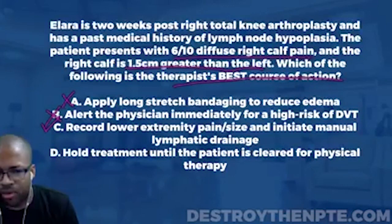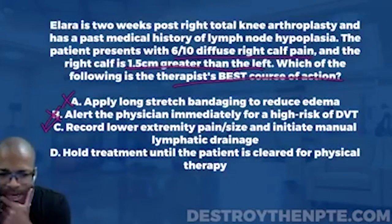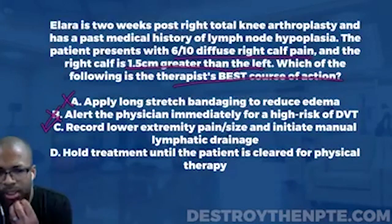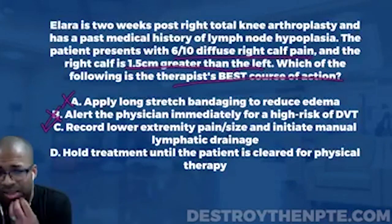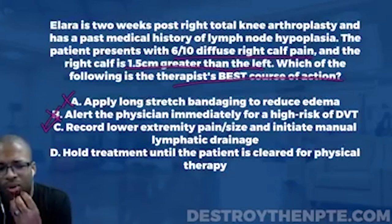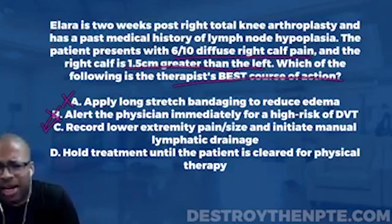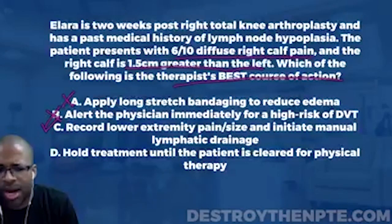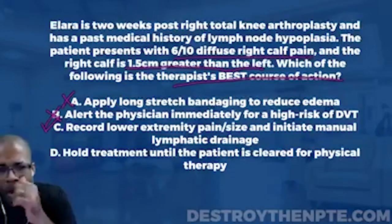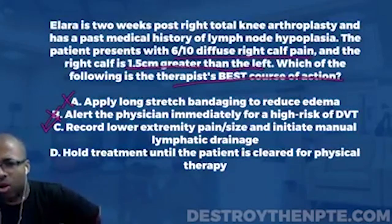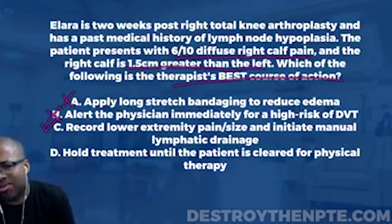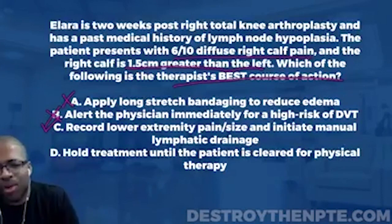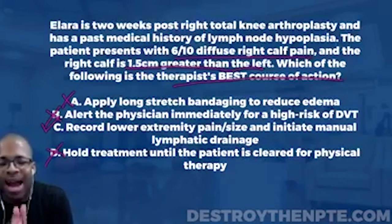Answer D says hold treatment until the patient is cleared for physical therapy. Should we hold treatment? The patient is not at high risk — or even moderate risk — for DVT per the Wells rule. Doing nothing is too extreme. Additionally, there's nothing in the question indicating the patient was on hold, and we're not referring back to the physician, so there's no reason to wait for clearance. D is eliminated.